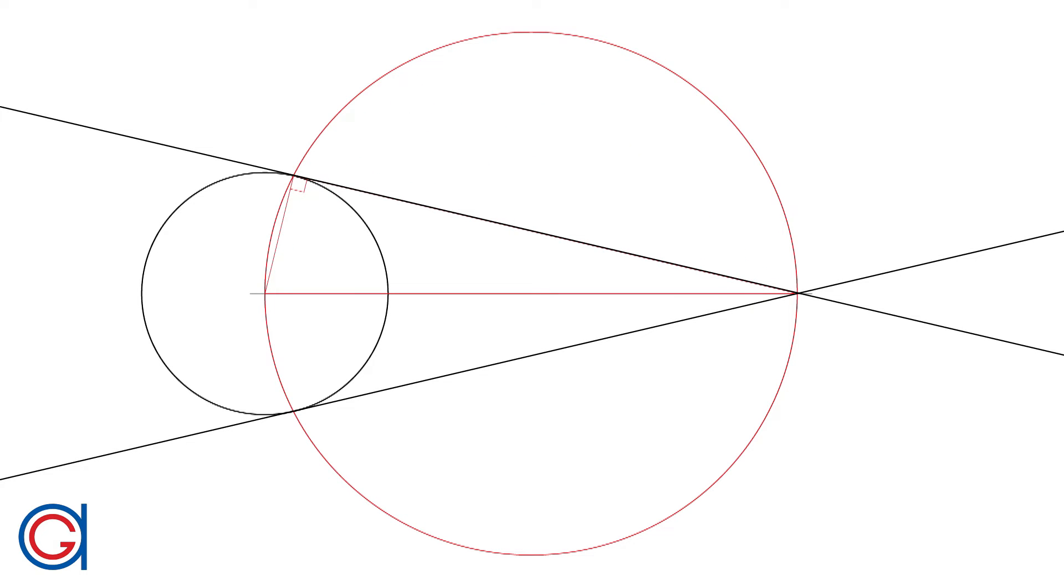We will use Thales theorem to generate the right angle we need between the radius and the tangent line.